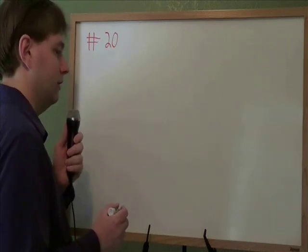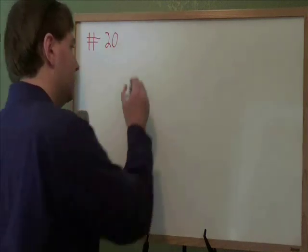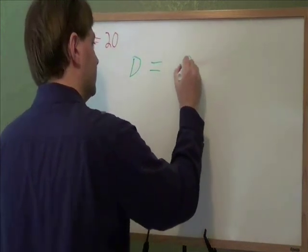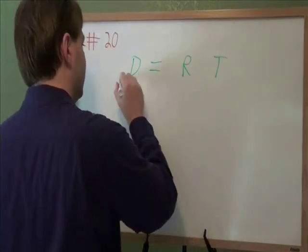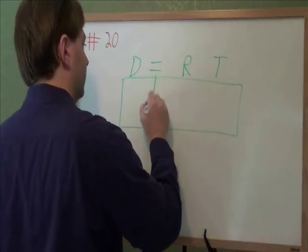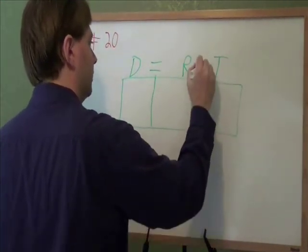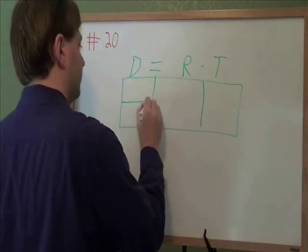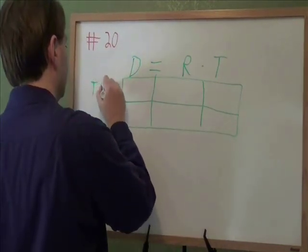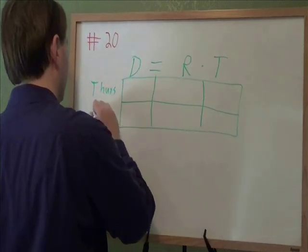On just about any problem that uses rate and seems at all complicated, you want to make a table like this. On top, you write distance equals rate times time. And you make a new row for everything you talk about. So here, we talked about Thursday and about Friday.